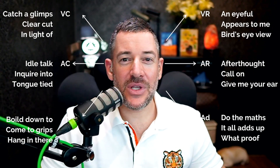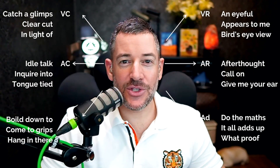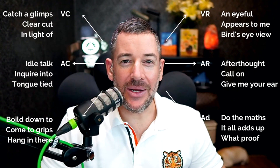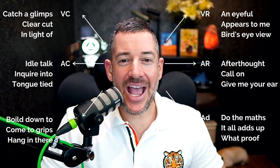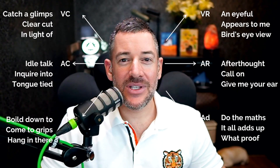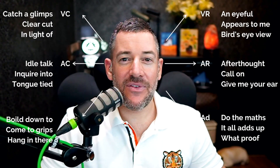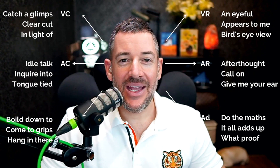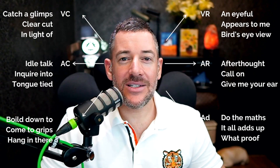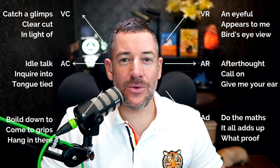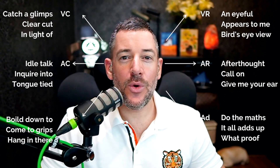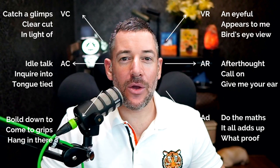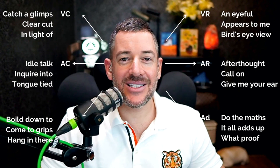The first thing is you want to use your sensory acuity. As you use your sensory acuity, you want to identify where the client's eyes are moving. These eye-accessing cues show you where the client goes to access information.